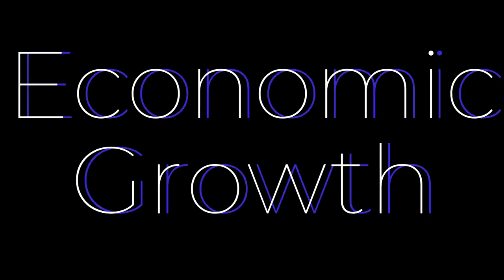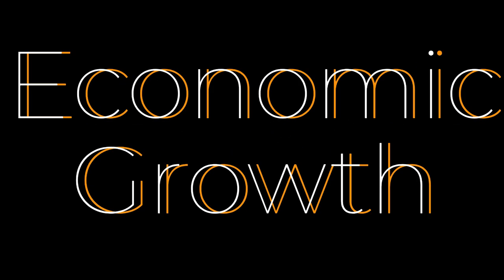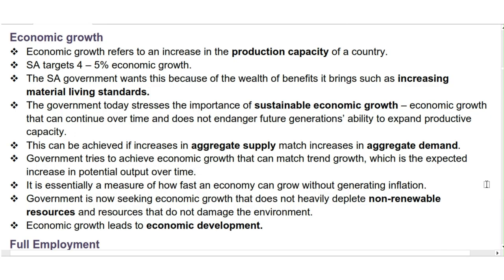Let us now look at each of the five macroeconomic objectives in depth, starting with Economic Growth. Economic growth refers to an increase in the production capacity of a country. We use real GDP and not nominal GDP to measure it — I'll link a video that explains the difference.